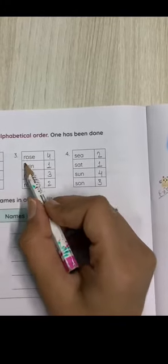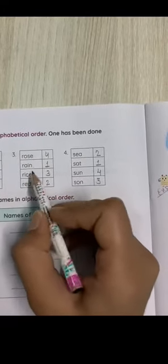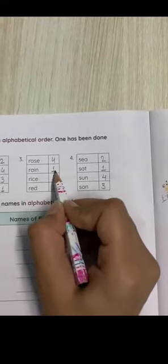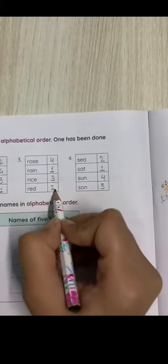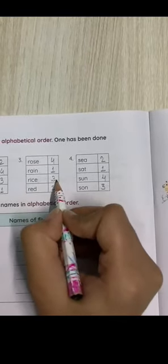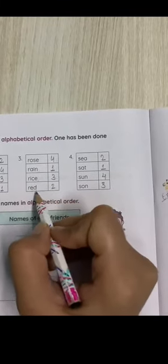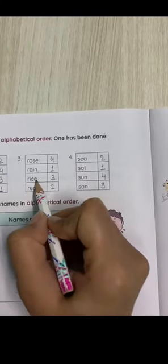Next: rose, rain, rice, and red. All the first letters are R, then we will check the second letters. Then A, number one. E, number two. I, number three. O, number four. The first spelling is rain, then red, then rice, then rose.